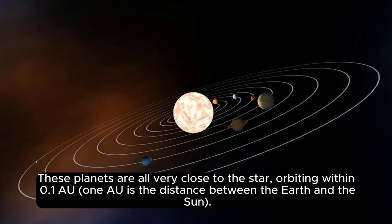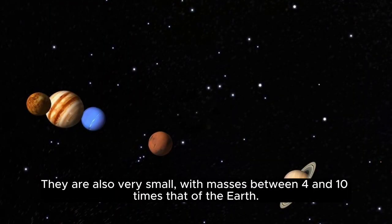These planets are all very close to the star, orbiting within 0.1 AU (one AU is the distance between the Earth and the sun). They are also very small, with masses between four and ten times that of the Earth.